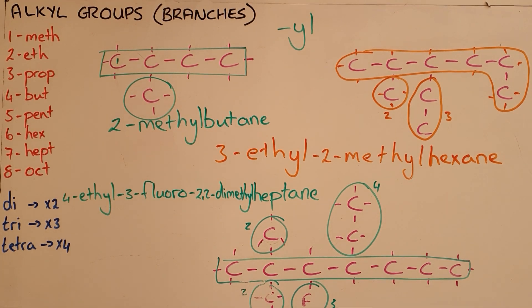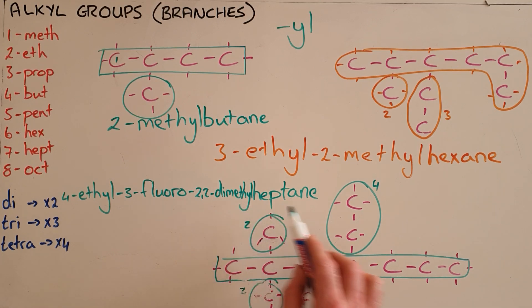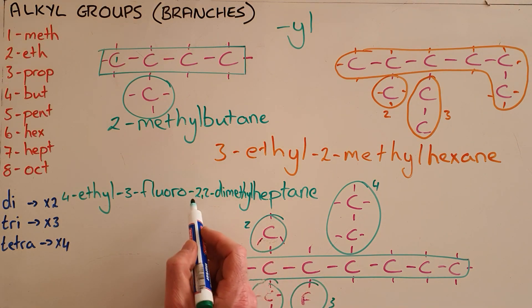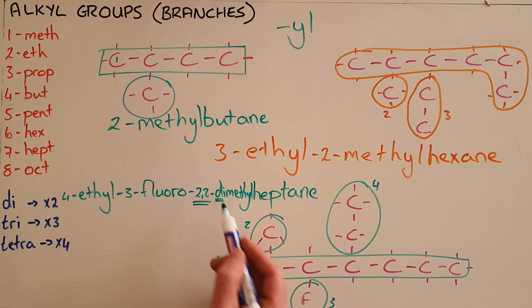Which makes the IUPAC name for this molecule 4-ethyl-3-fluoro 2,2-dimethyl-heptane. Important to note here that even though they are both on the second carbon it is still necessary to list the number 2 twice and to indicate that with a di.